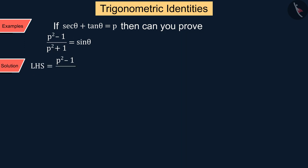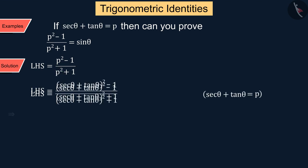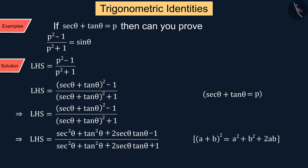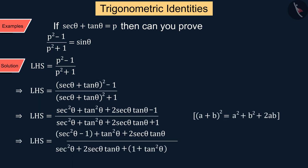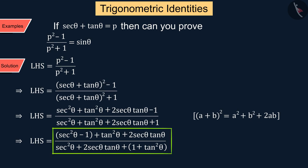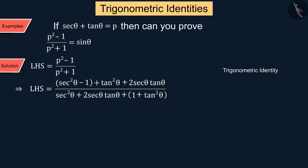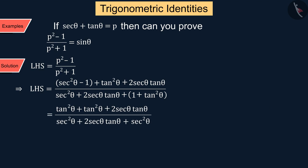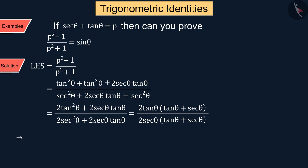According to the given information, p is replaced by sec θ plus tan θ, from which we get the following equation. In this equation, using the trigonometric identity 1 plus tan² θ equals sec² θ, after solving we obtain tan θ upon sec θ.